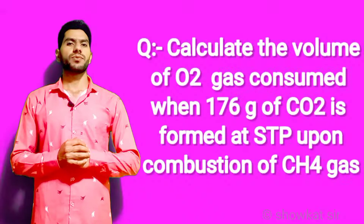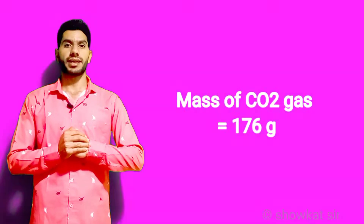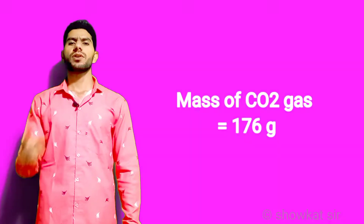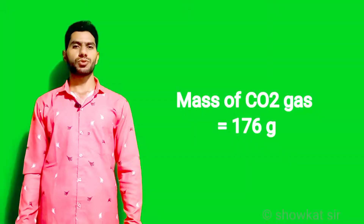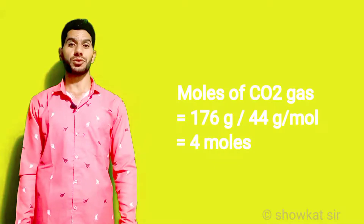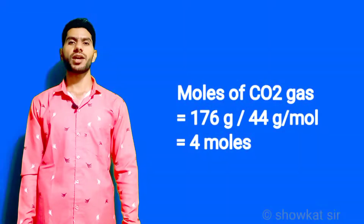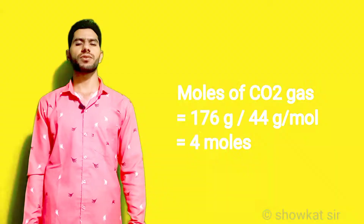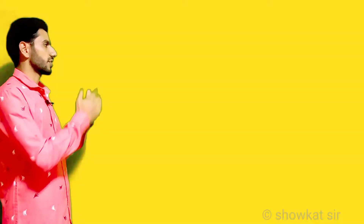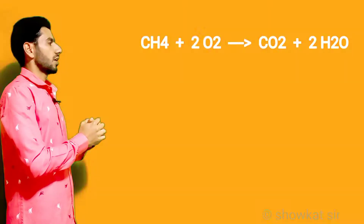In this question, we are given 176 grams of carbon dioxide. So first of all, you will convert it into moles — it will come out to be 4 moles. So that means we are having 4 moles of carbon dioxide. Now, in this question, you will write a balanced chemical equation.